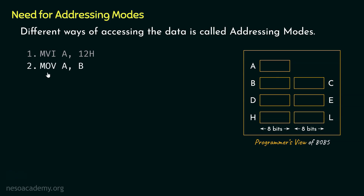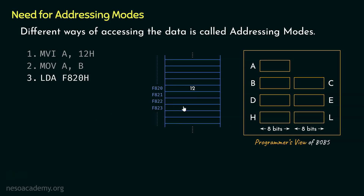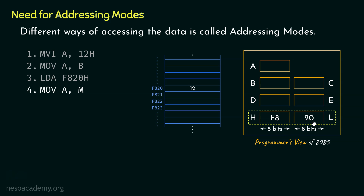Now consider another instruction, MOV A,B. Say within register B, we have got the value 12. The execution of this particular instruction will copy this data 12 and place it within the accumulator register. Now consider another instruction, LDA F820. Let's suppose within the memory location F820, we have got the data 12. Therefore, the execution of this instruction will also load the value 12 within the accumulator register. Coming up next, if we execute the instruction MOV A,M, and say within the HL pair we have got the value F820, the HL pair having this value will specify that the microprocessor is pointing to that particular memory location. Thereafter, execution of this instruction is going to load the data 12 within the accumulator register.